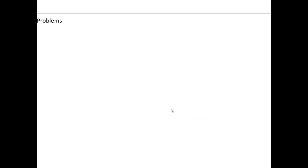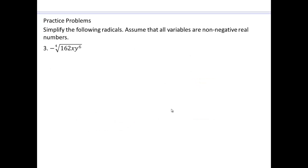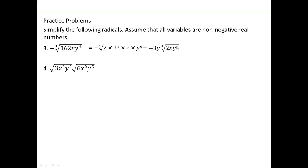Try that on your own the same way as we did the previous one — pause the video, try it. Factor everything and simplify. 3 to the 4th. 4 over 4 is 1, and 6 over 4 is 1 and two-fourths. So y to the 1 is out here, and y to the 2nd is in there.